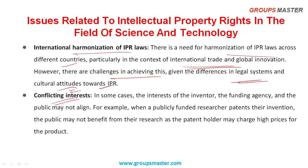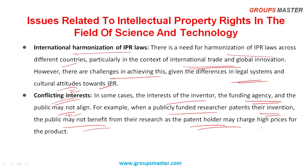Next one is conflicting interests. In some cases, the interests of the inventor, the funding agency, and the public may not align. For example, when a publicly funded research patents their invention, the public may not benefit from their research as the patent holder may charge higher prices for the product.